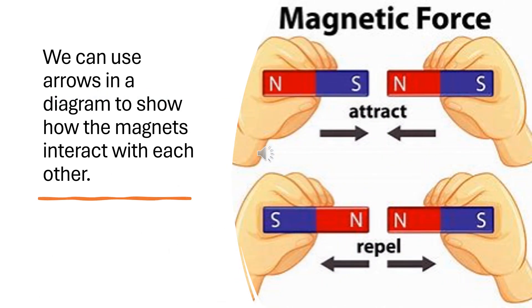Magnetic force — We can use arrows in a diagram to show how the magnets interact with each other.